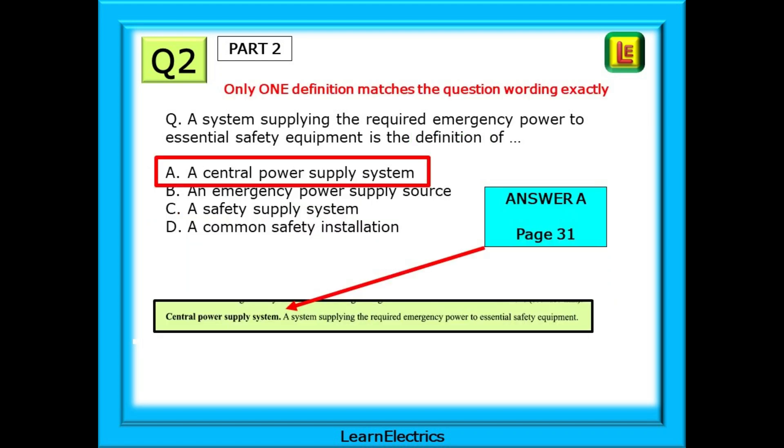Look through the definitions section and find the answers that are listed there. In this case there is only one of the answers that is shown in definitions and this is answer A. Only one definition matches the question wording exactly.